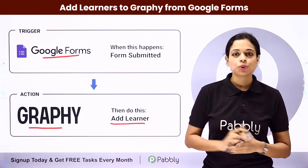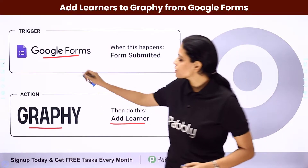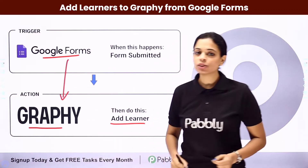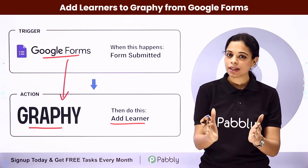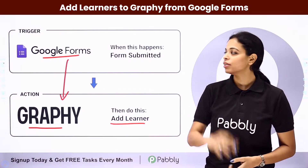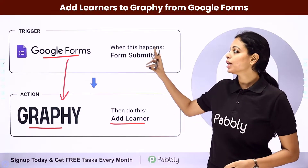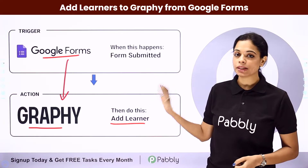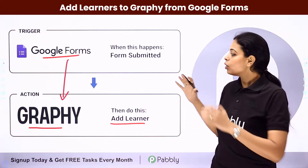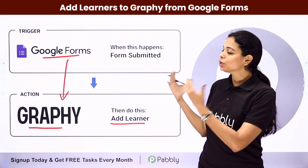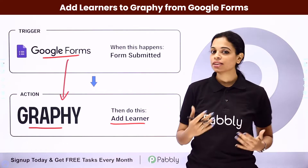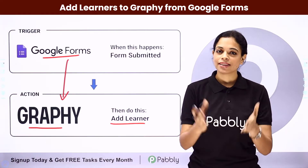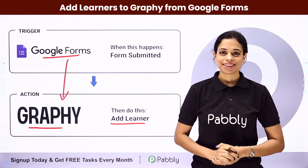How can you do that? You will have to set up some integration between the two applications, and the same thing can be done using Pabbly Connect software. Here your trigger application would be Google Forms and your action application would be Graphy. Now let me take you to my screen to show you how to integrate and automate this entire process.